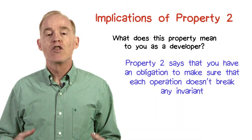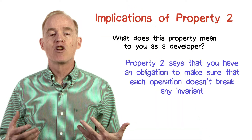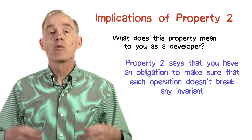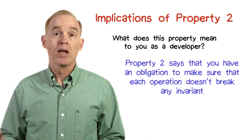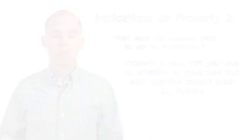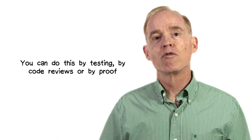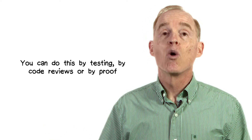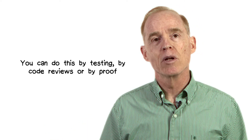So we're going from spec directly to implementation, just one level of refinement. Property 2 says that you have an obligation to make sure that each operation in the spec doesn't break any invariant. You can ensure yourself of this by testing, by code reviews, or even by proving. But somehow you have to do it.